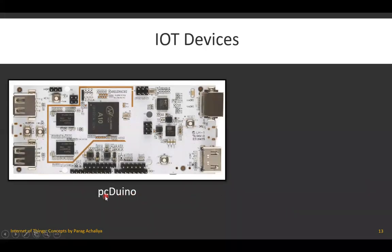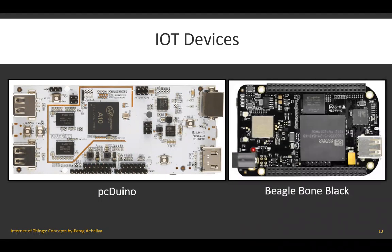One more IoT device is a PC, which also has USB ports, HDMI port, power supply, and various pins for attaching sensors. Another example is the BeagleBone Black, which is very similar to the previous IoT devices and has ports for connecting external devices to develop IoT applications.